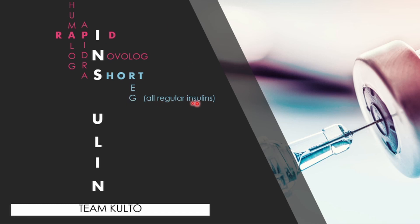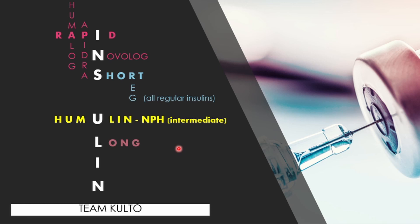All regular insulins are short-acting insulins. For intermediate insulin, remember Humulin-N and NPH. For long-acting insulin, you have Levemir and Lantus. I suggest you take a screenshot of this — it will be very helpful in your studies if you're trying to remember your rapid, short-acting, intermediate, and long-acting insulins.